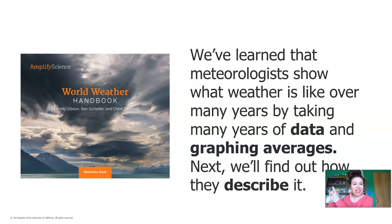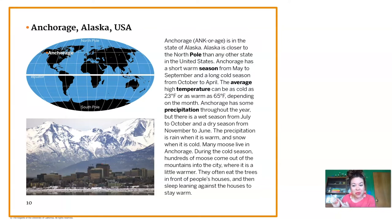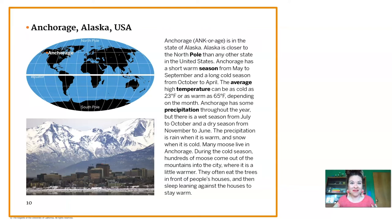We're going to be using this book. It's called the World Weather Handbook and it's called a reference text. A reference text is a non-fiction text that's full of information and you don't have to read it from beginning to end. You can flip through the book and just find pages of information specific to whatever you're looking for. We're going to start by using page 10. Do you remember what city this is? It's Anchorage, Alaska. Take a look at that picture and try to visualize in your mind what the weather might feel like in Anchorage, Alaska based on what you see. Do you think it looks hot or cold? Let's do some reading. I'm going to read this passage about Anchorage, Alaska, and I want you to be listening for information about what the weather is like and what its seasons are like.